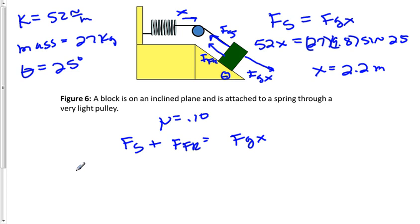So again, we'll say kx for our spring is going to be 52 times x. We don't know what distance is going to go. Force of friction is going to be mg cosine theta mu. Because we're on an incline. So I'll go plus the mass, which is 27 kilograms times 9.8, and then we'll say times the cosine of 25.